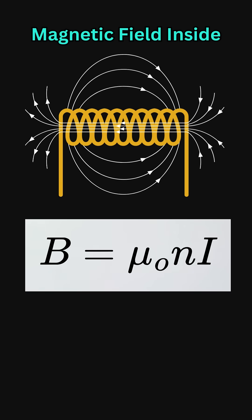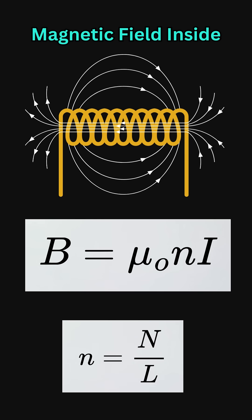The equation for the magnetic field inside a solenoid is simple: B = μ₀nI, where n is turns per unit length and I is the current through the coil.